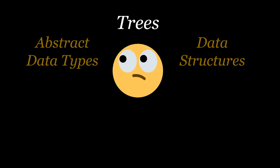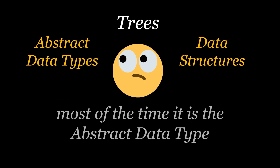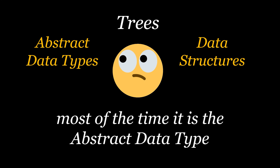Now, what about trees? Some people refer to trees as abstract data types, others as data structures. This confusion was created because the same word is used to represent both of them. When the same word is used to represent both the abstract data type and the data structure, know that most of the time this word actually represents the abstract data type. So in our example here, a tree is in fact an abstract data type. The tree abstract data type has a lot of implementations, and most of them will be covered here on Geekific in upcoming videos, so stay tuned.